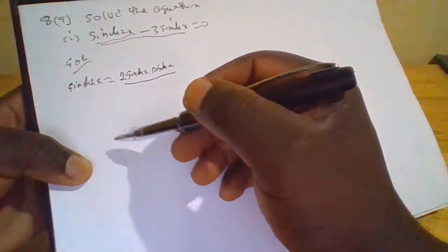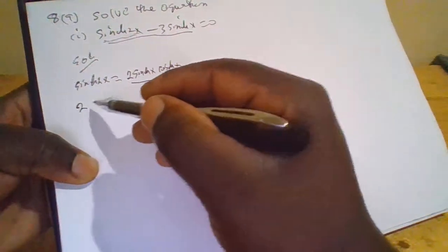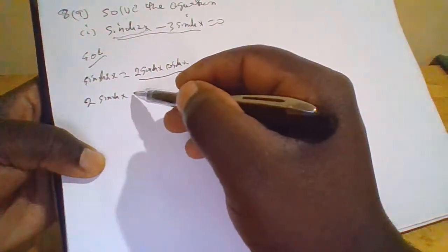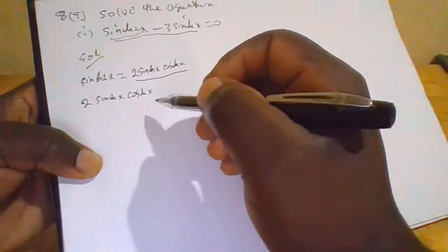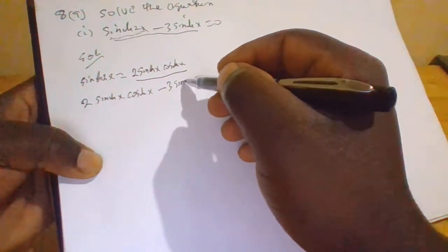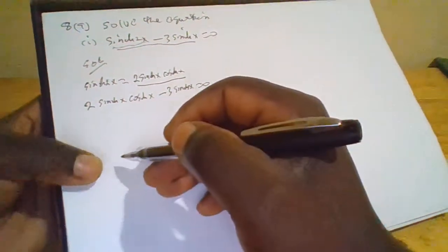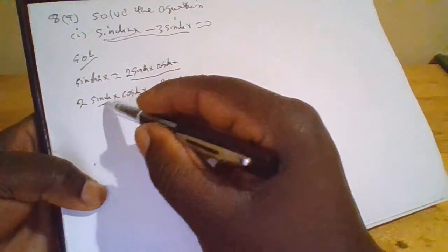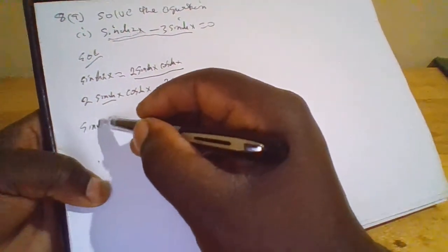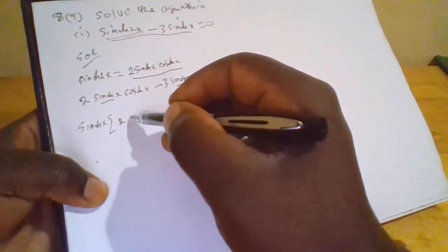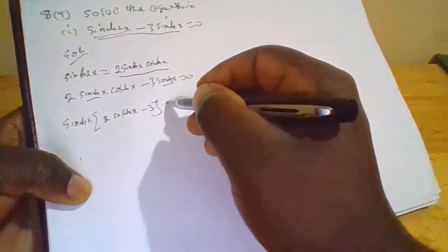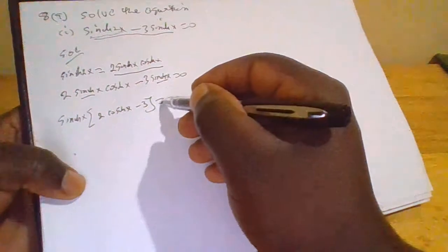So the equation becomes 2 sin(x) cos(x) minus 3 sin(x) equals 0. We can factor out sin(x), giving sin(x) times the quantity 2 cos(x) minus 3, equals 0.